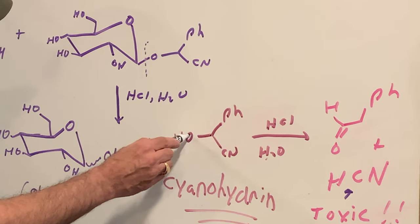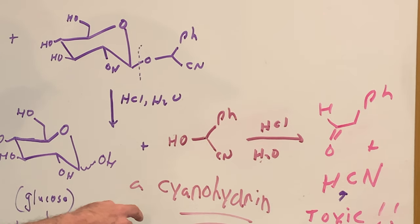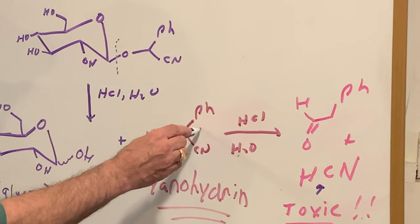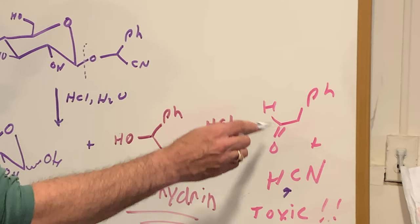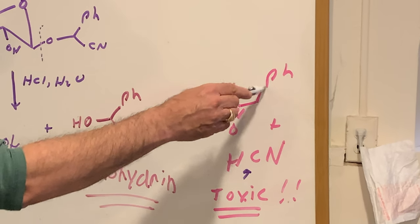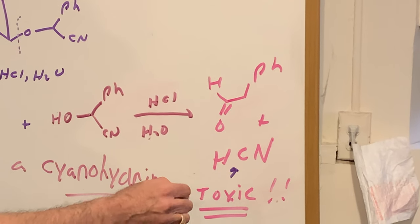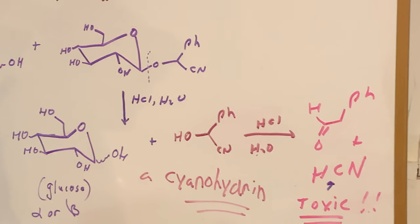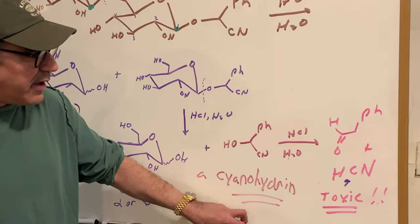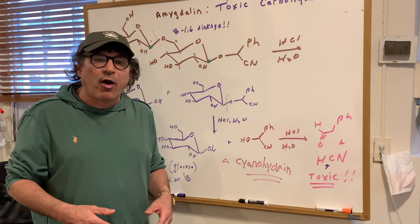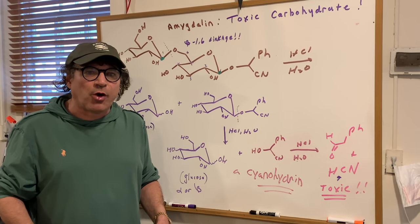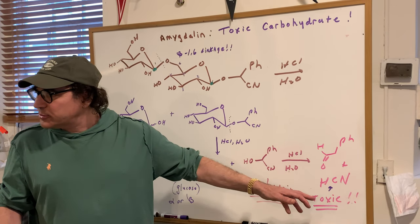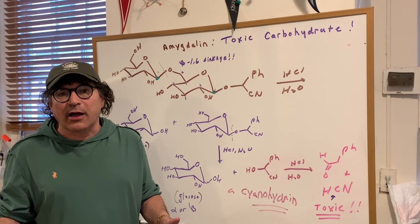Anytime you have a carbon with an OH and a cyanide on it, we call that a cyanohydrin. This cyanohydrin is then cleaved and we get two products: benzaldehyde and HCN. Hydrocyanic acid is extremely toxic — it can break up and give off cyanide ion, and cyanide ion can also interfere with the electron transport chain. So as you can see, this is toxic to the cells of the body.